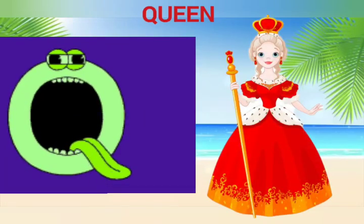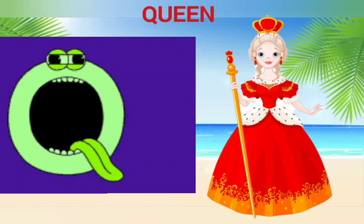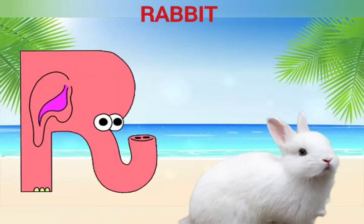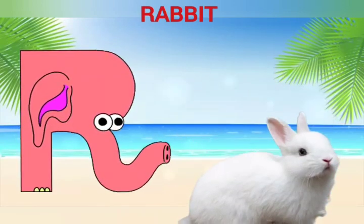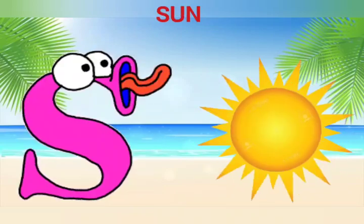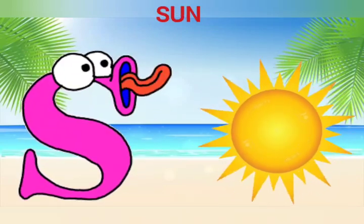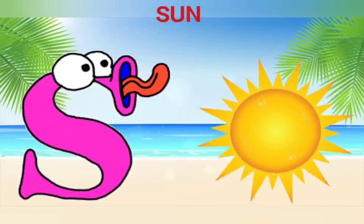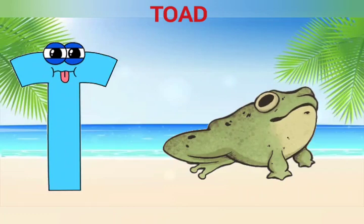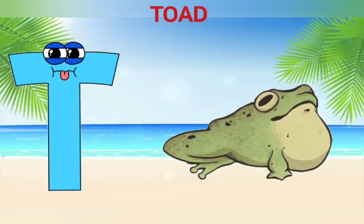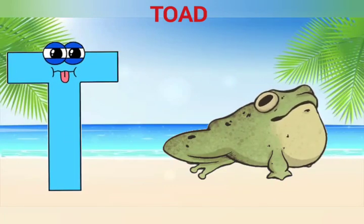Q is for Queen, Q-Q-Queen. R is for Rabbit, R-R-R-Rabbit. S is for Sun, S-S-Sun. T is for Toad, T-T-Toad.